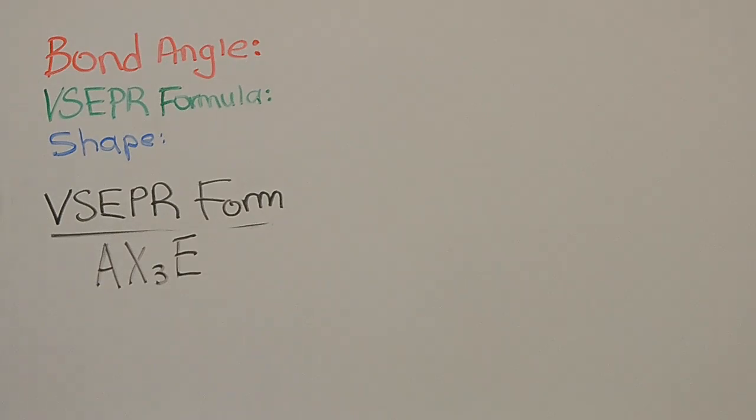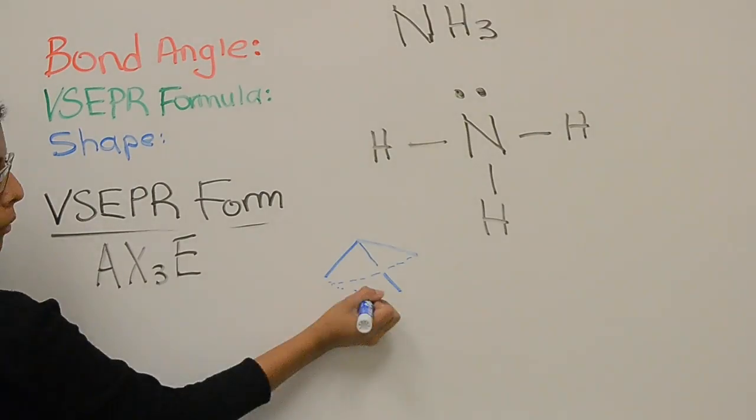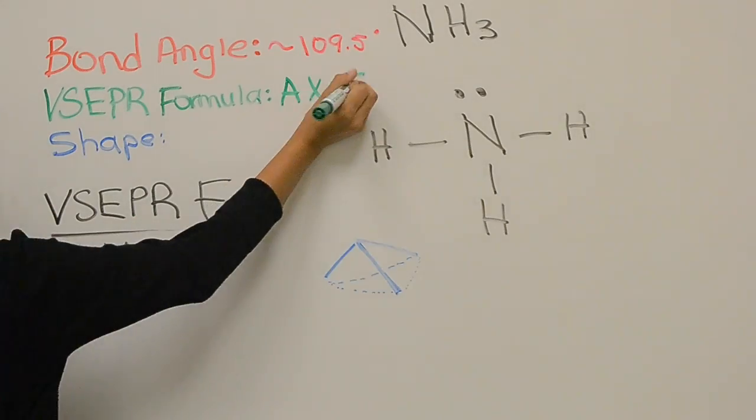Ammonia has a shape that's called a trigonal pyramidal. It's approximately 109.5 degrees because the lone pairs are pushing on the hydrogen atoms closer.